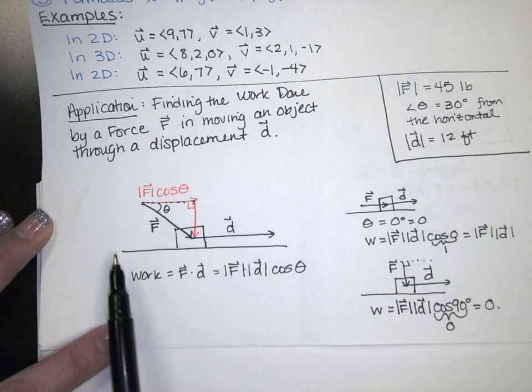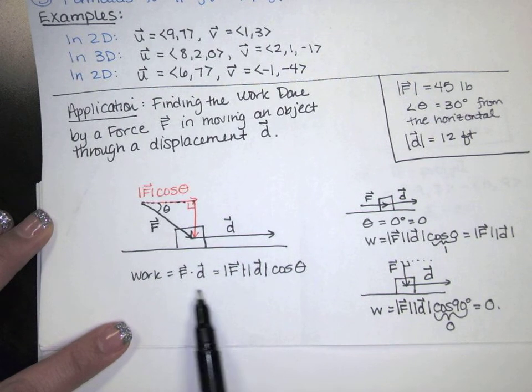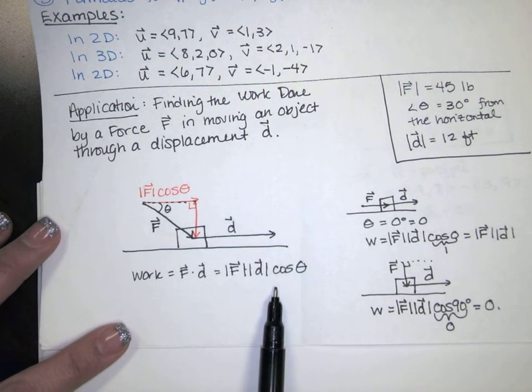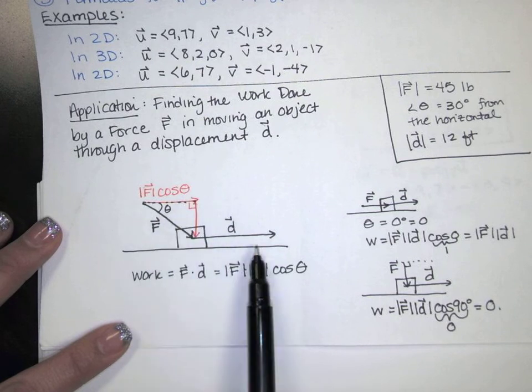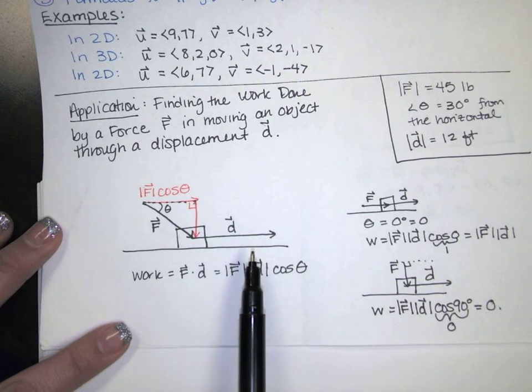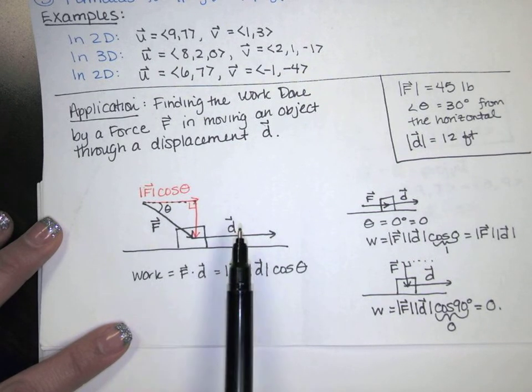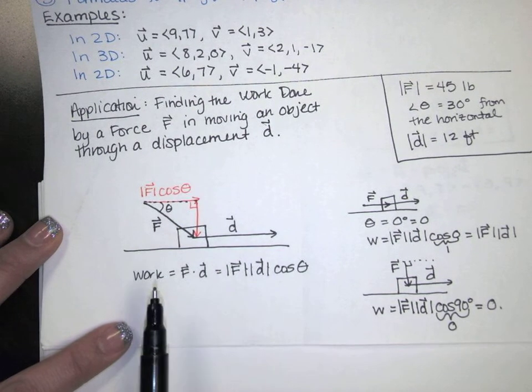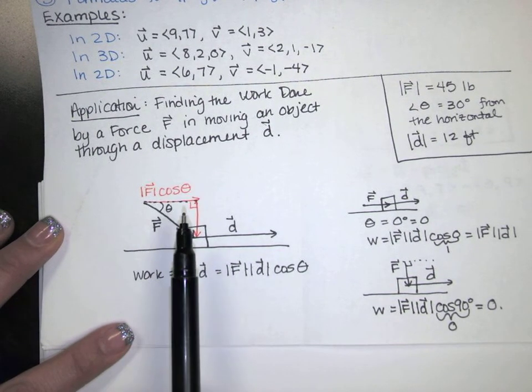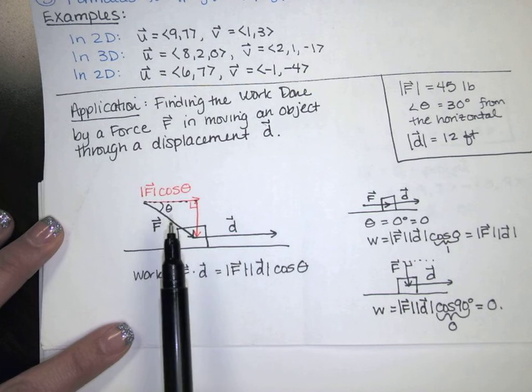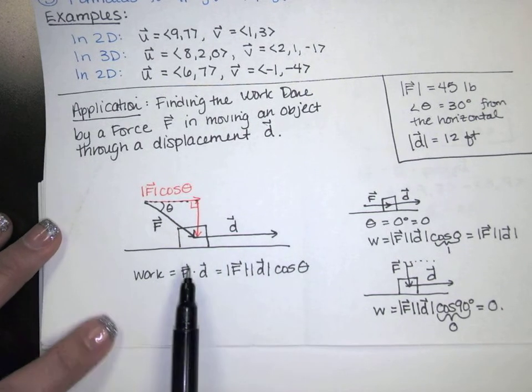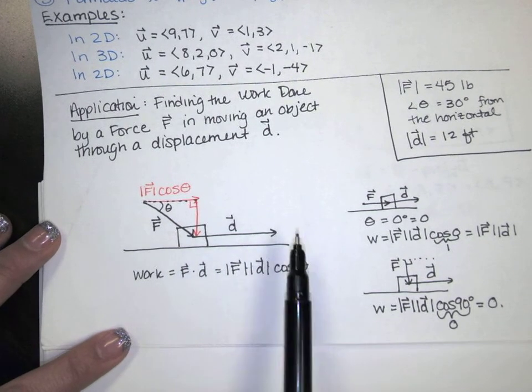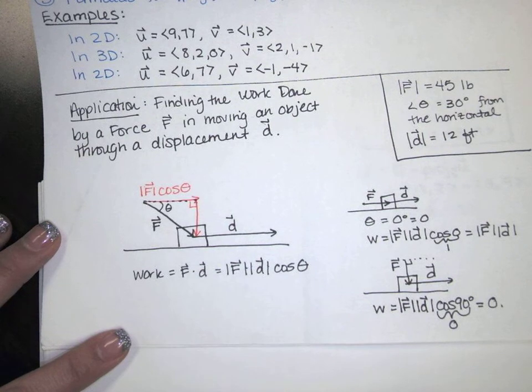So that might give you some physical intuition for what it is we're actually doing every time we calculate a dot product. It's some measure of how much these two vectors are pointed in the same direction, but it's also proportional to their magnitudes. So it's not exactly a measure of direction only. It's a measure of direction and also the magnitudes of the two forces. So keep this in mind, keep this physical intuition in mind as you do your dot product problems.